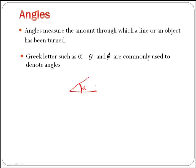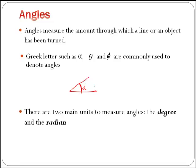There are two main units to measure angles: the degree and the radian. You are probably more familiar with the first, but it is important that you learn how to express an angle in radians too. Both are defined with reference to a circle.